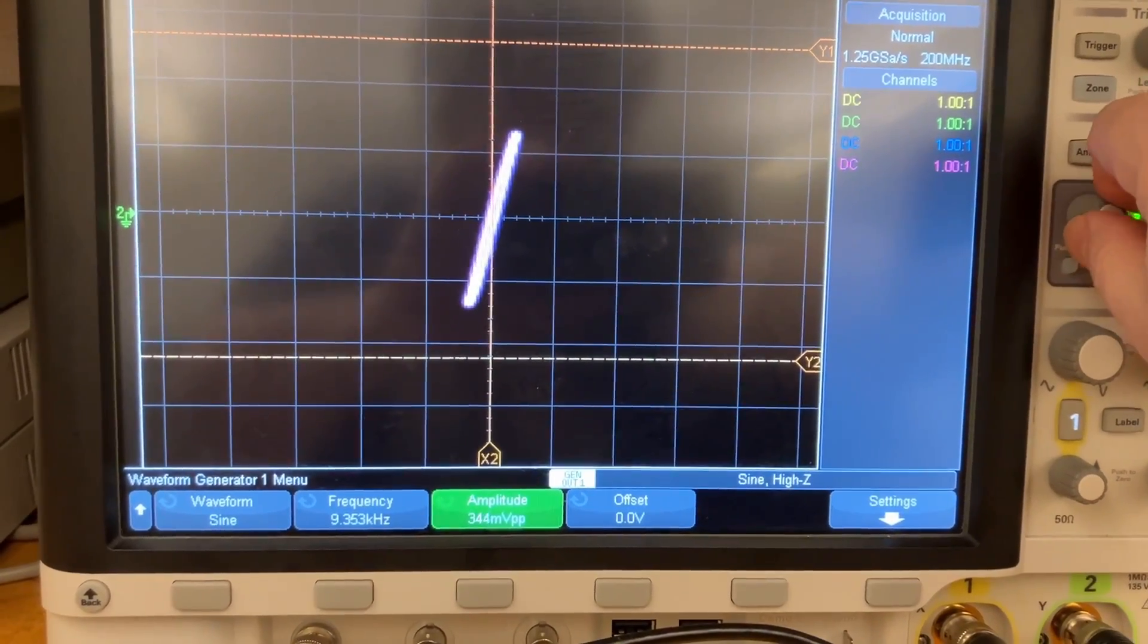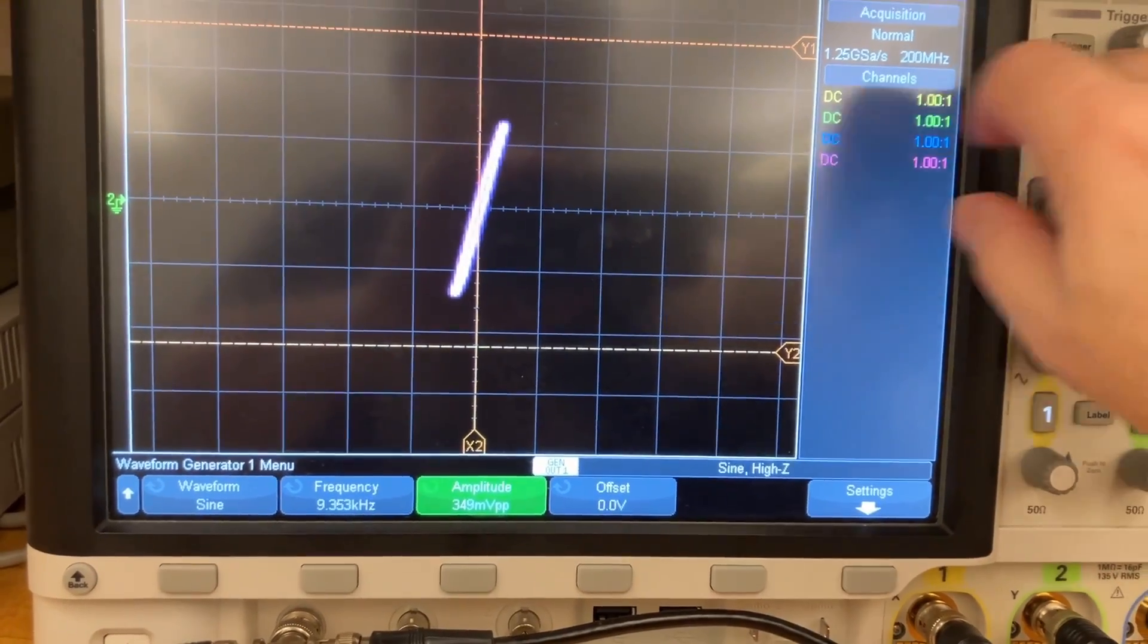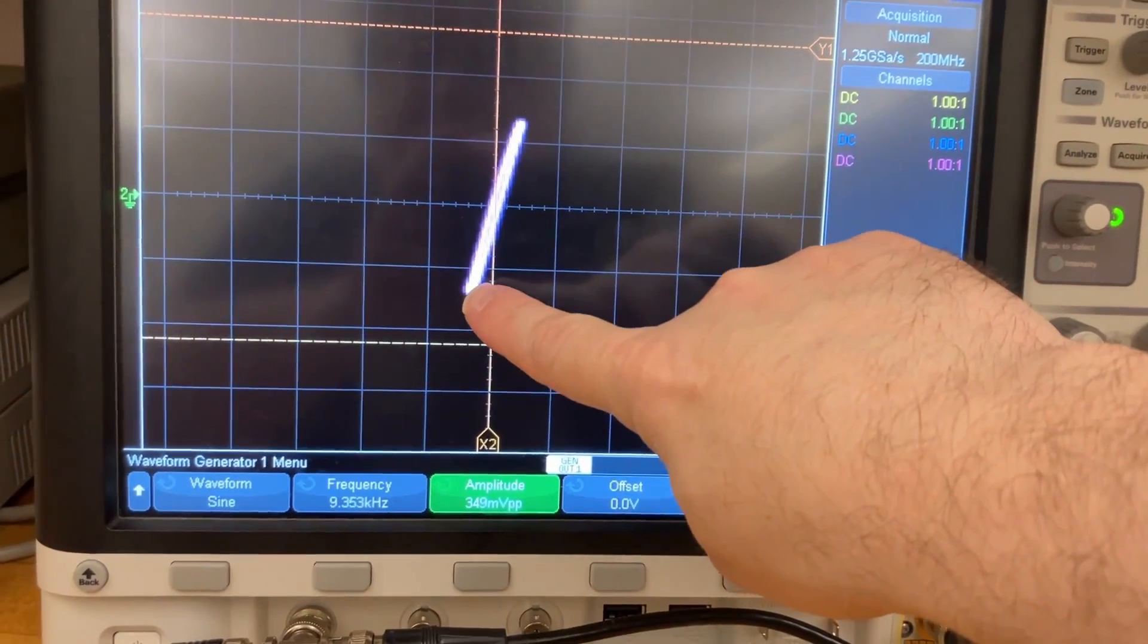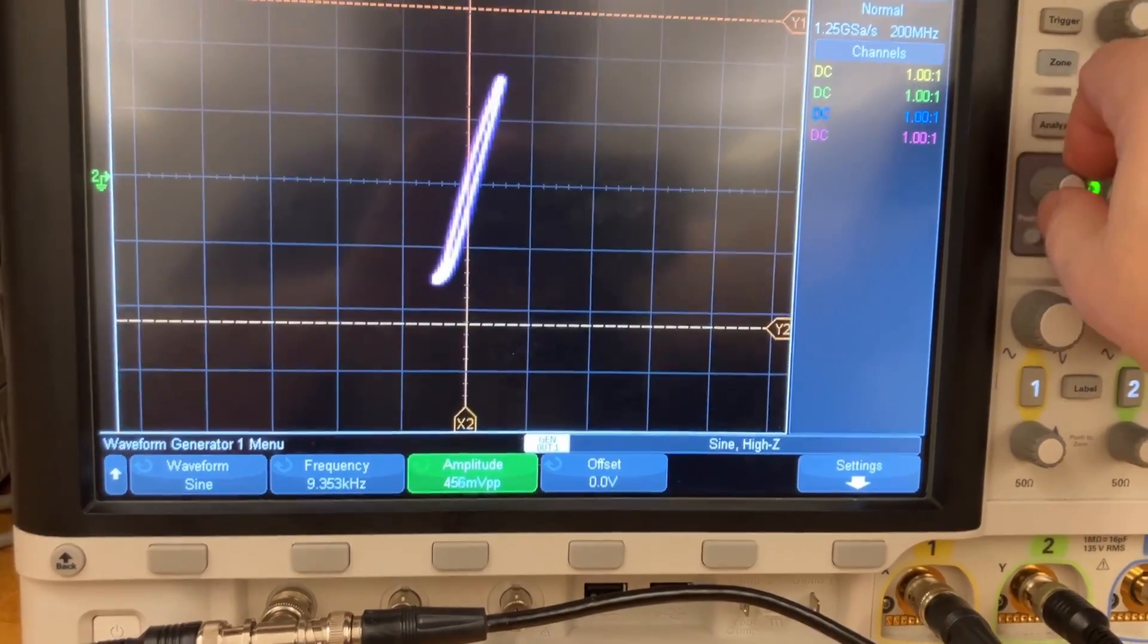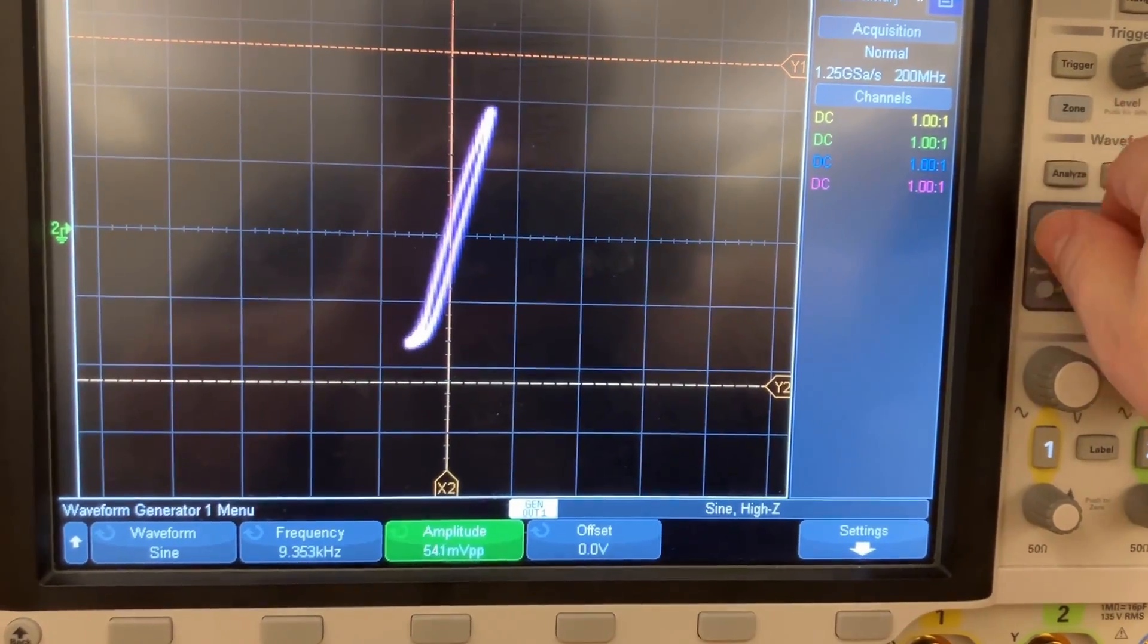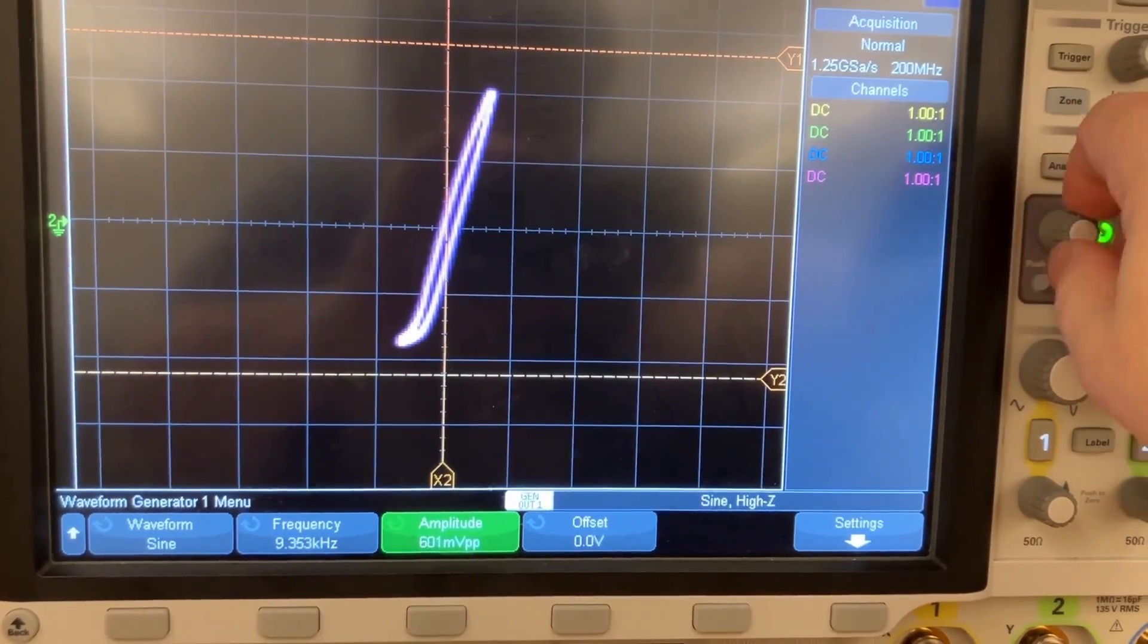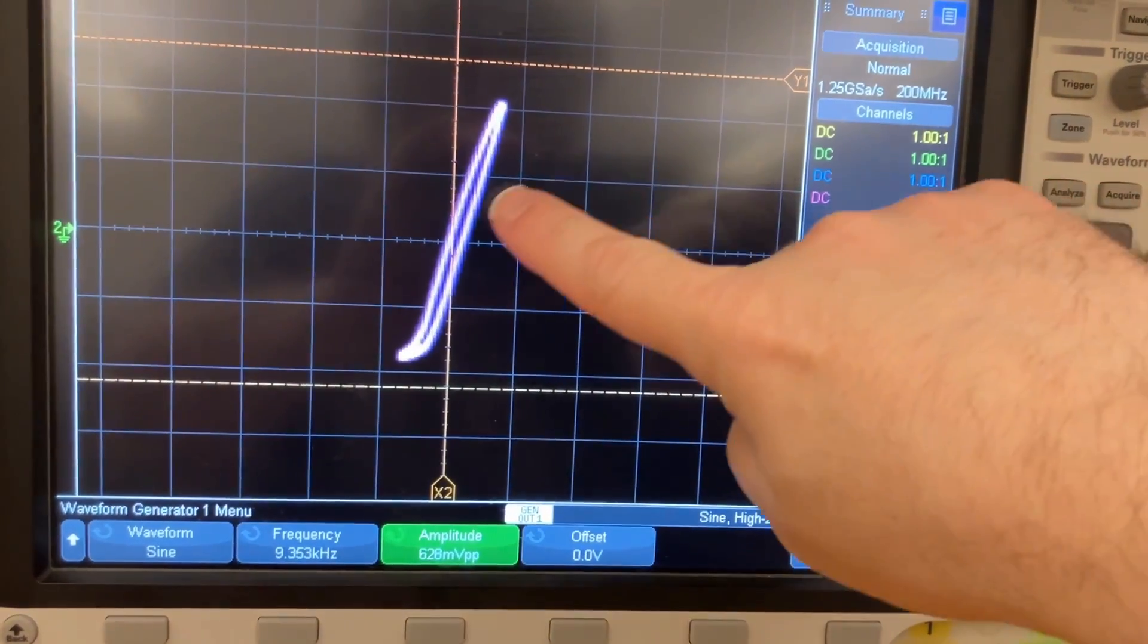And around this point, maybe 350 millivolts peak-to-peak, you'll see it starts to round out at the bottom. But it's still pretty linear up here.